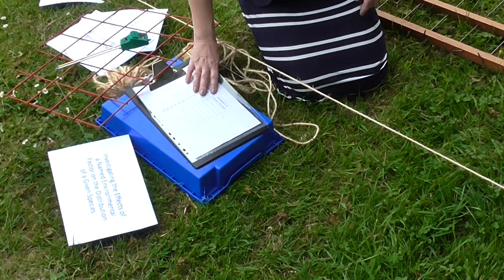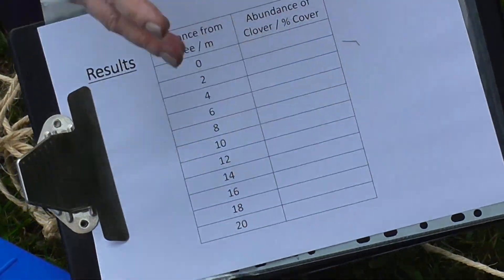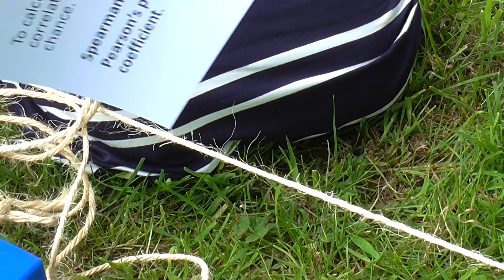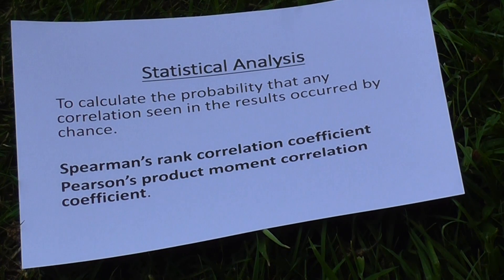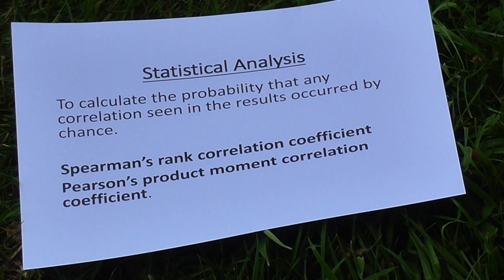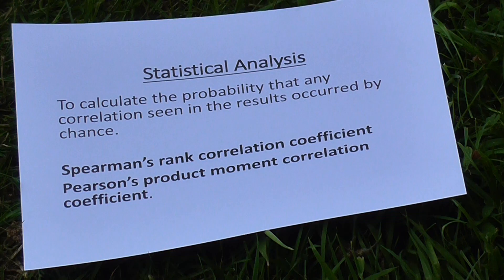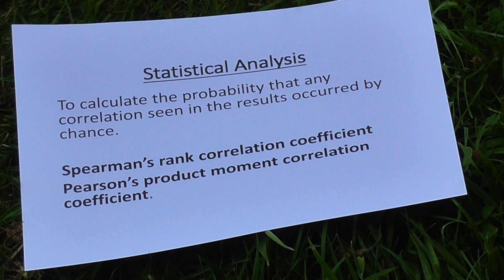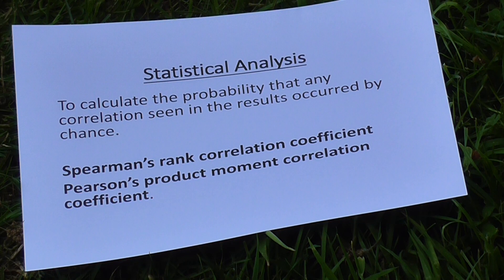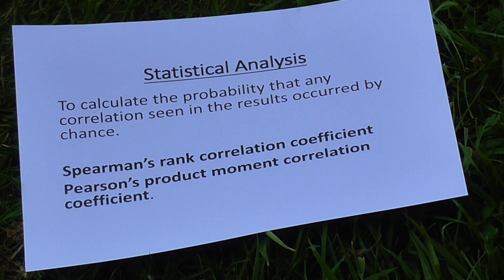The key thing is that once you've collected your data, the obvious thing to do is draw a scatter graph of your results — it may show some kind of correlation. Unfortunately, that's not good enough for scientists. If we really want to know whether there is a correlation between distribution of clover, abundance of clover, and distance from the tree, we have to carry out some kind of statistical analysis. Statistical analysis is carried out to calculate the probability that any correlation we see in our results has occurred by chance — because if there's a high probability it's occurred by chance, there's no real correlation. In this case, because we are investigating a correlation between two variables, we would carry out a Spearman's Rank correlation coefficient or a Pearson's Product Moment correlation coefficient. You will not have to carry these out in the exam, but you should be able to choose which test to apply to various environmental investigations.